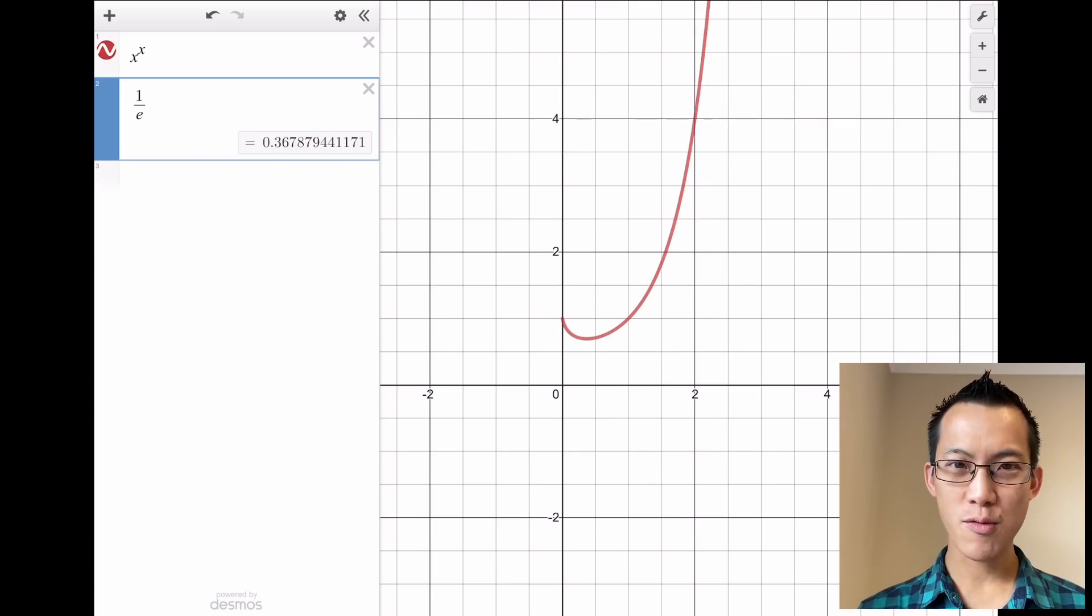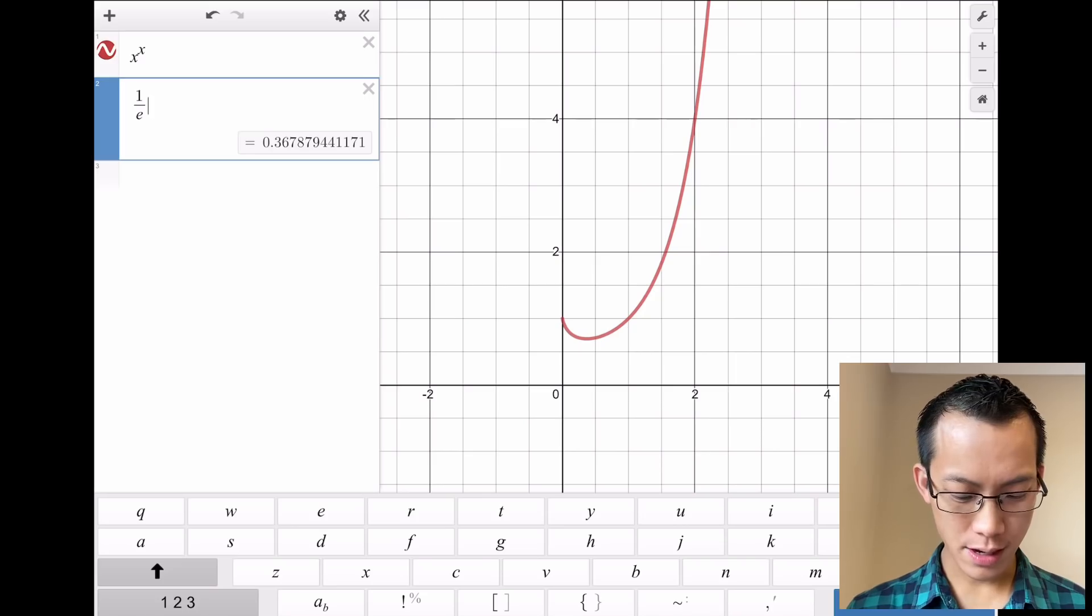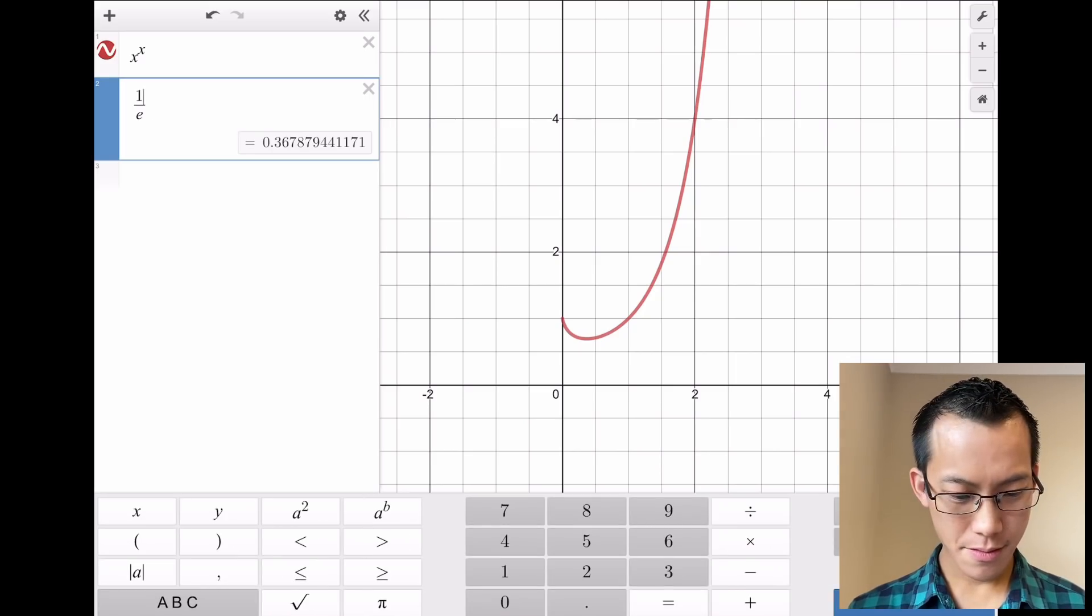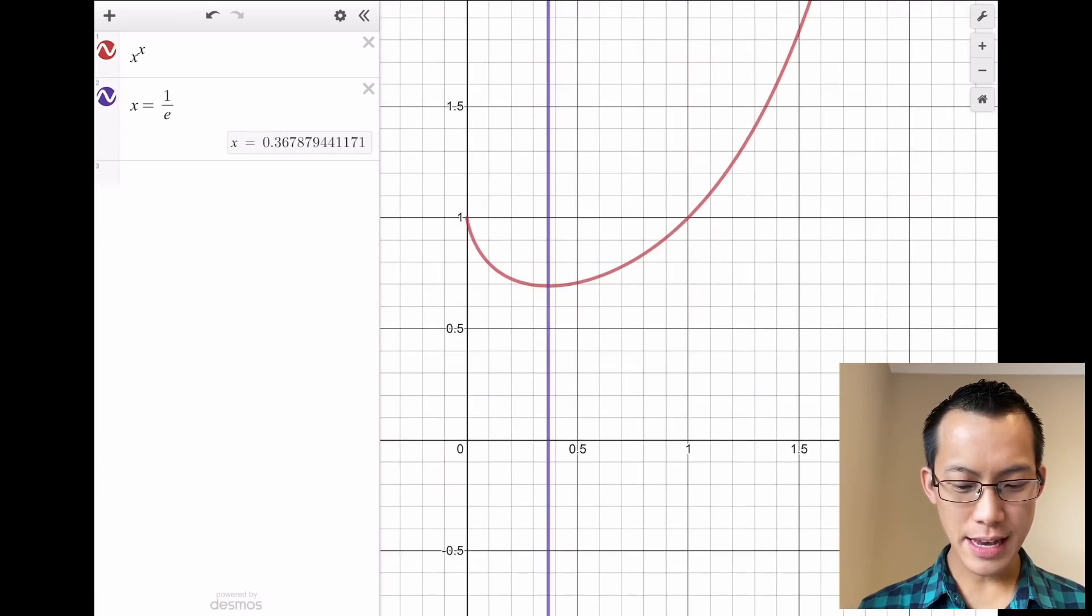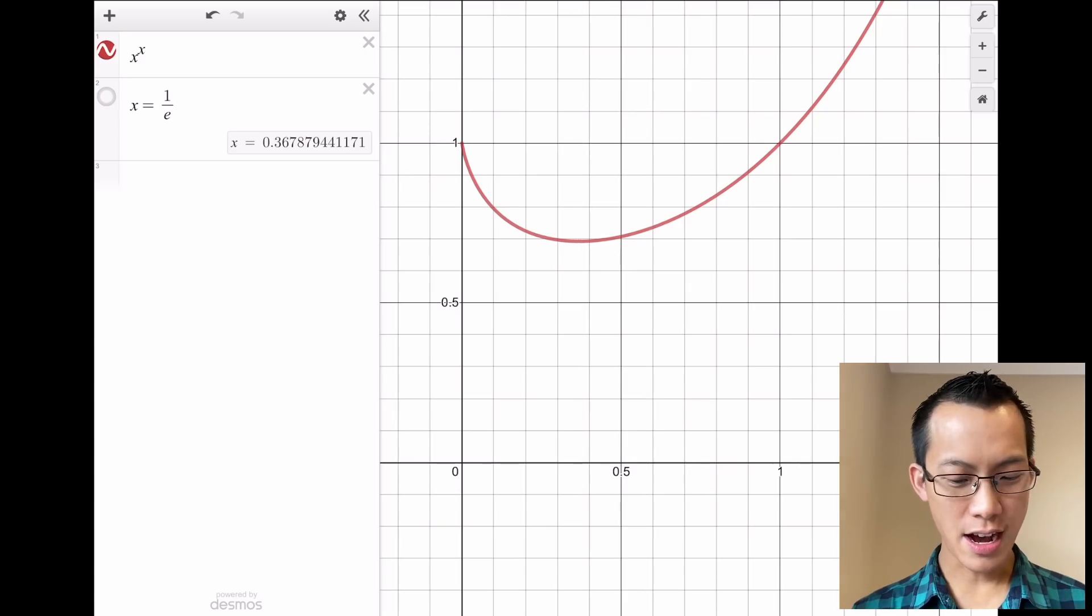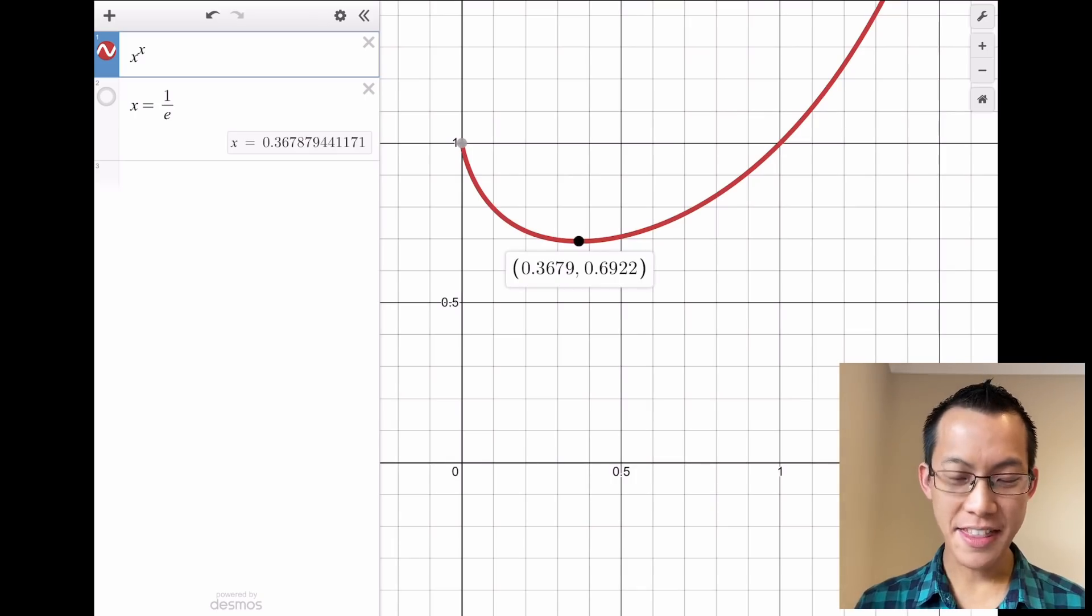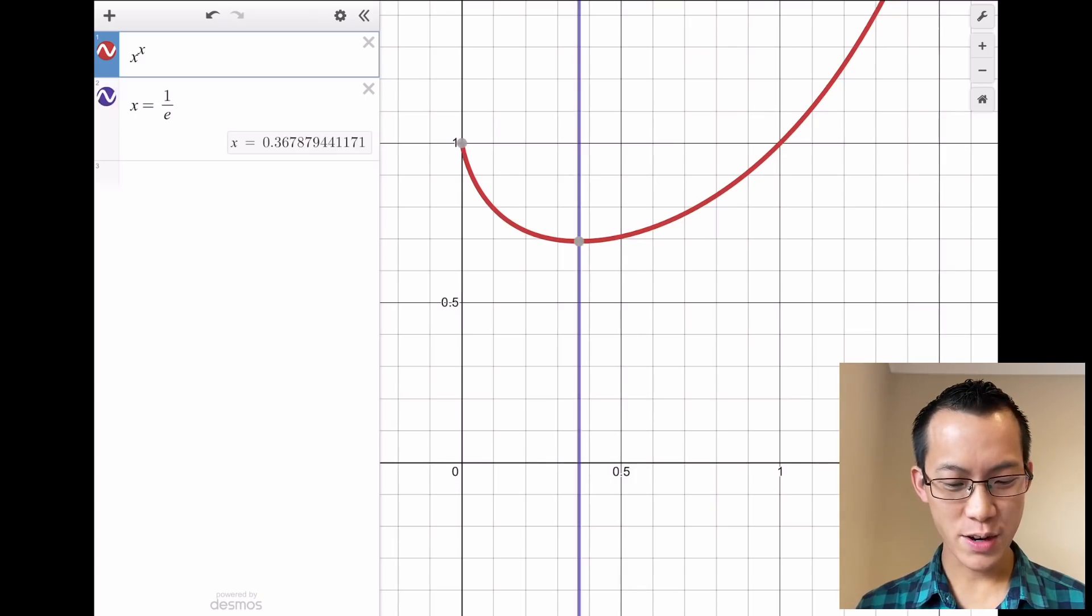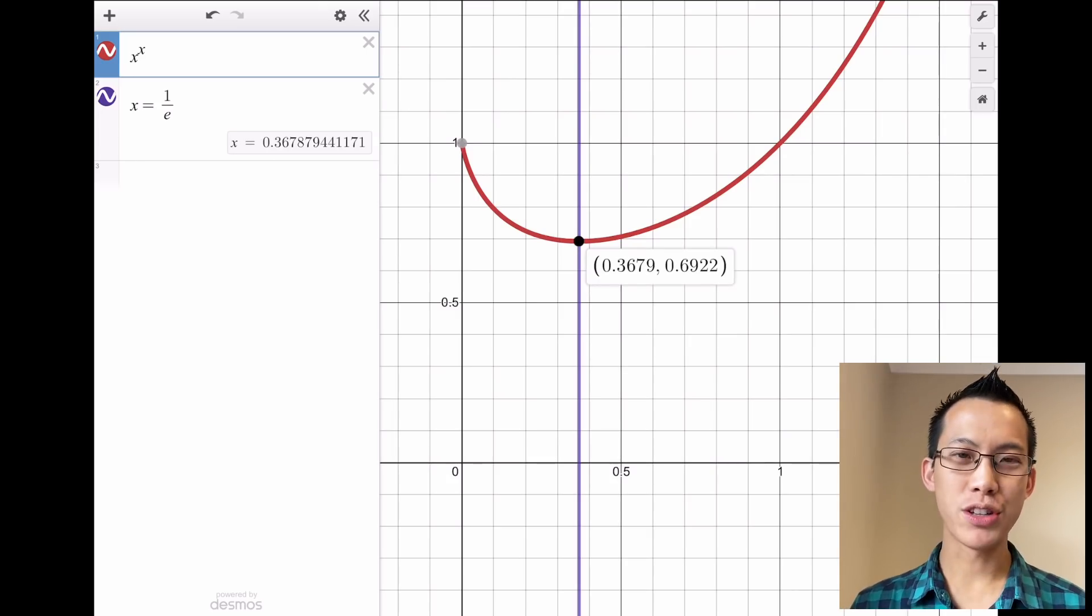I'm going to evaluate 1 divided by e. It's pretty close to a third, 0.367. I can test whether this is the right spot by graphing. This is my x value, and you can see it lines up exactly with where I saw my stationary point. If you click on a graph in Desmos, it'll tell you exactly where the stationary point is. There's the 0.3679, which lines up exactly with the turning point we located.